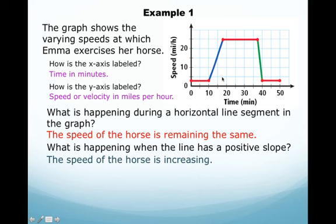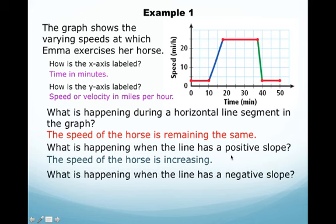What is happening when there's a line of negative slope? That's this green line. And if a blue line with a positive means we're increasing speed, the green line means we're decreasing speed. So we're going from 25 miles an hour back to 2 or 3 miles an hour.